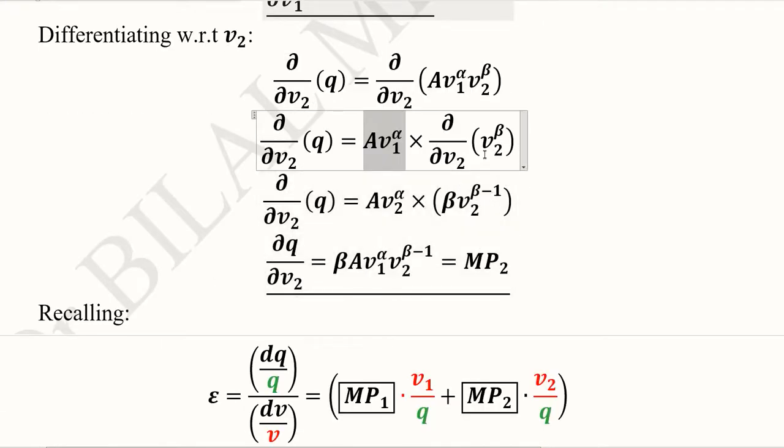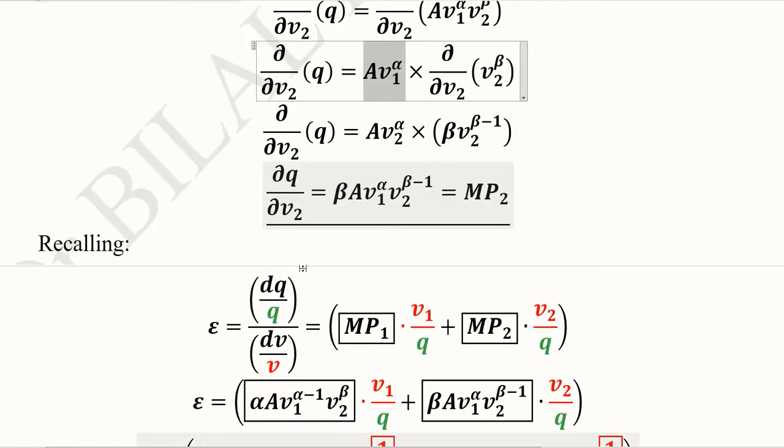It is easy to apply the power rule here. We applied it and then rearranged it where beta comes first, then A, V1 term, and V2 term. This would be MP2, the marginal product of V2.